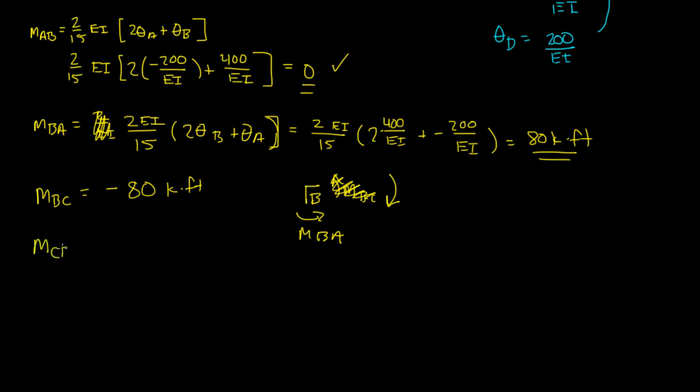MCB, again, you just plug it in, should get 80 kip foot. And MCD should be negative 80 kip foot. Again, this means joint C is in equilibrium, so let's check.